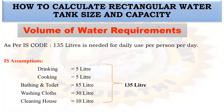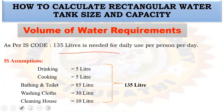The topic is how to calculate rectangular water tank size and capacity. We need to find the volume of water requirements. According to code, 135 liters is needed for daily use per person per day. That is the standard code estimation.